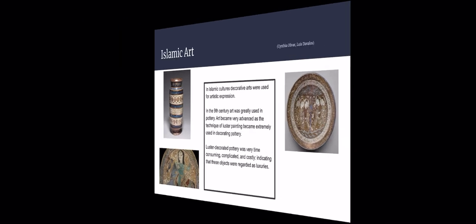Opaque glazes can be found as blue-painted in Basra, dating to around the 8th century. Another significant contribution was the development of stoneware originating from 9th-century Iraq.